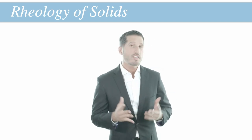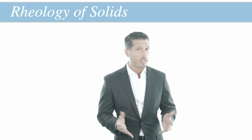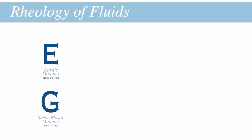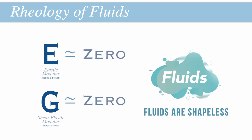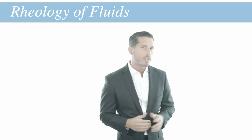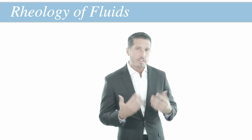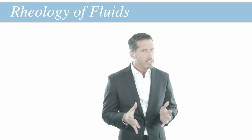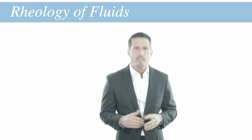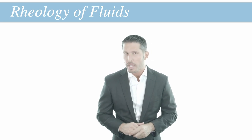One may ask: we have discussed these moduli of elasticity as applied to solids, but how do they apply to fluids? These moduli are not useful for describing the behavior of fluids because, as already described, fluids possess no shape, and we cannot measure resistance to deformation in materials that are by definition shapeless. So in fluids, the value of E and G is essentially zero — fluids have a zero modulus of elasticity because they are unable to resist deformation. Elasticity is therefore largely a property of solids, but fluids have their own intrinsic rheological property: viscosity.